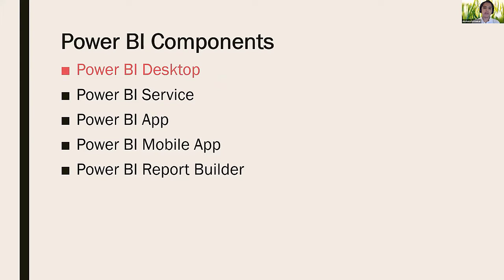When we talk about Power BI, there are several components under this umbrella. The first one is Power BI Desktop — that's what today's session is about, where you actually build your report. The next one is Power BI Service, where once you build your report on Desktop, you publish it. It's a cloud service offering, and the users you want to share with can go to Power BI Service to open the report you've published. You can build a report on Power BI Service as well, but some features available in Desktop won't be available there. And there's a Dashboard feature available only in Power BI Service.